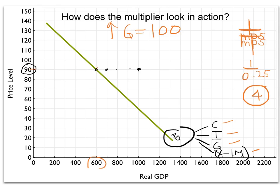That's going to be true at every price level. The new aggregate demand curve will be $400 to the right of the old aggregate demand curve. So an initial increase of $100 yields an aggregate demand curve that's shifted right by $400.